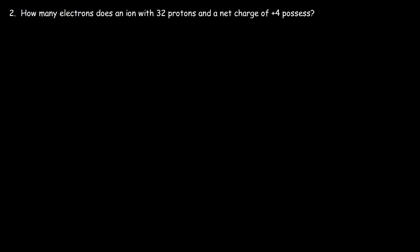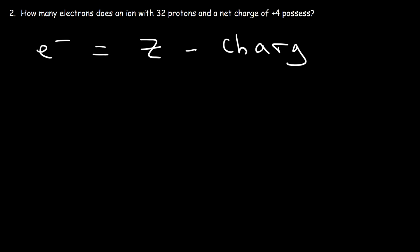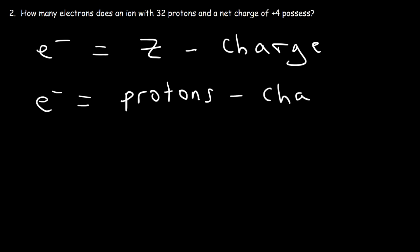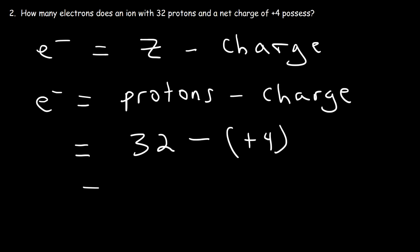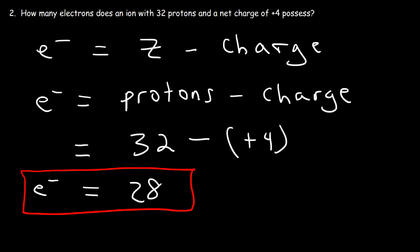Here's another problem: how many electrons does an ion with 32 protons and a net charge of +4 possess? Using the equation — electrons equal atomic number minus charge — we have 32 minus 4, which is 28. Since the charge is positive, there are fewer electrons than protons. So the answer is 28 electrons. If the charge is +4, there will be 4 fewer electrons than protons.